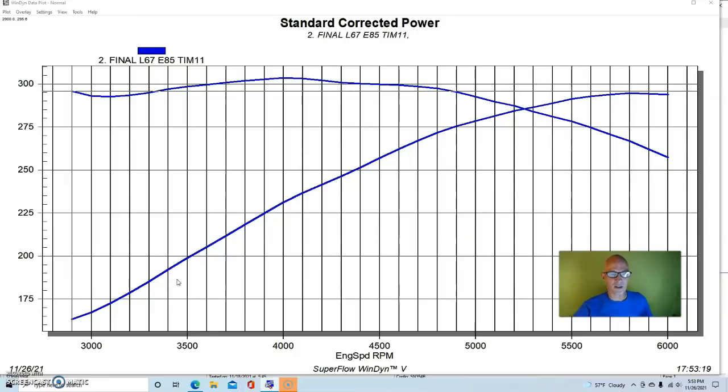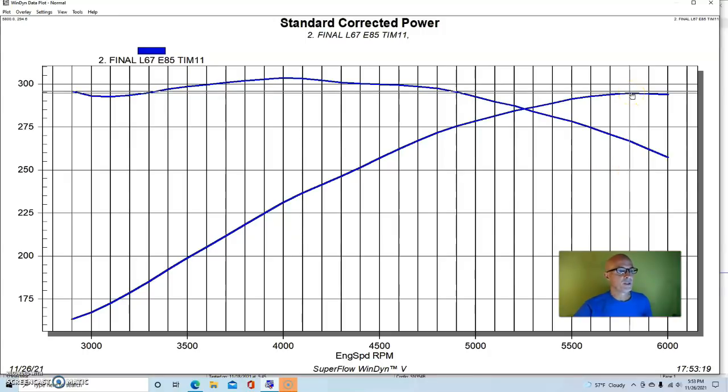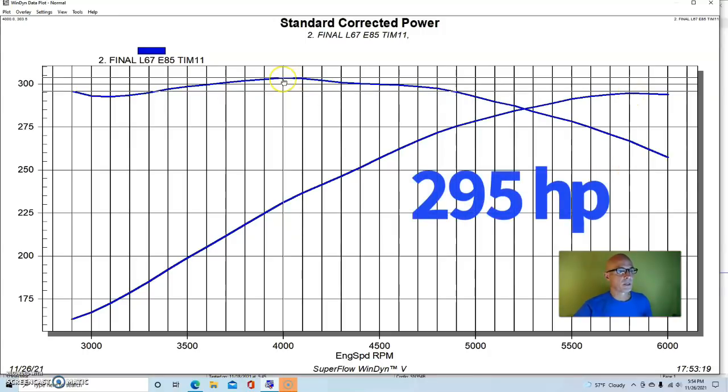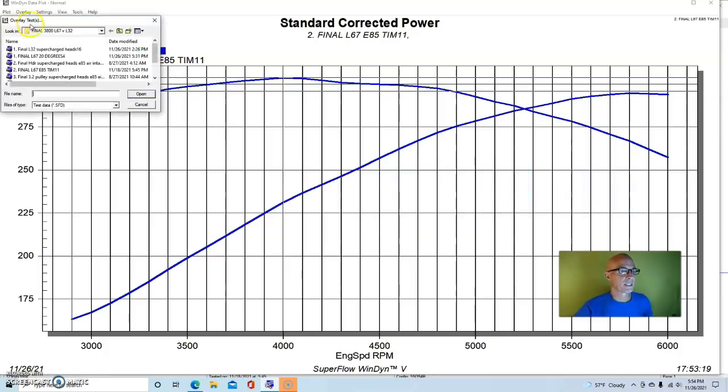Now, we did turn the timing up another degree or two more, or we tried another degree or two more on the L32, because I was thinking that it just didn't seem like it was making the power that it should have based on its rated power output, but this is our L67. It made 295 horsepower and 304 foot pounds, and here it is in comparison to the L32.